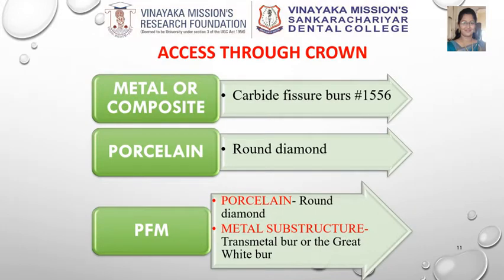Either access can be established through the crown or the crown may be removed. The bur of choice is made based upon what material the existing restoration is made of. To cut metal like cast metal, amalgam, or composite, carbide fissure bur number 1556 is used. A round bur is used to cut porcelain crowns. In case of PFM, a round bur is first used to cut the porcelain layer, then a transmetal or Great White bur is used to cut the metal substructure.